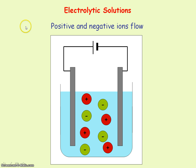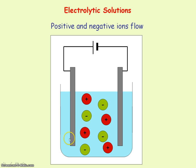Finally, looking at current in electrolytic solutions: it is due to the flow of positive and negative ions. In the electrolytic solution, the solution is connected by electrodes to a battery. The left electrode is connected to the positive side of the battery, so it is positively charged. The right electrode is connected to the negative terminal, so it is negatively charged. As a result, positive ions move towards the negative electrode and negative ions move towards the positive electrode.